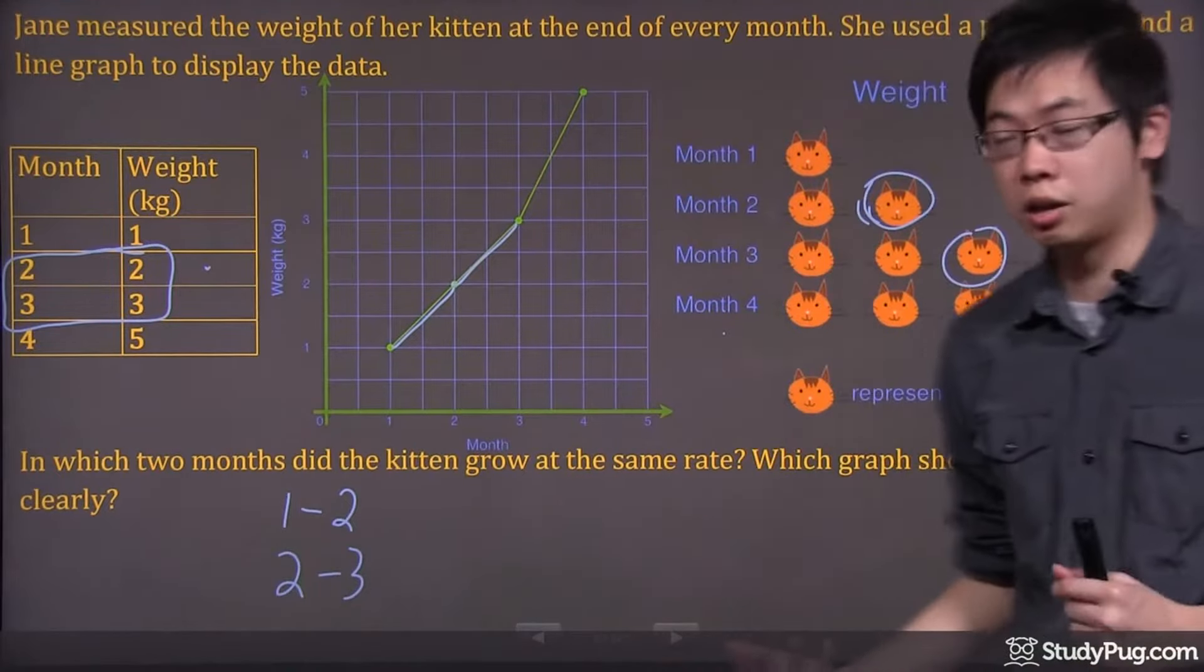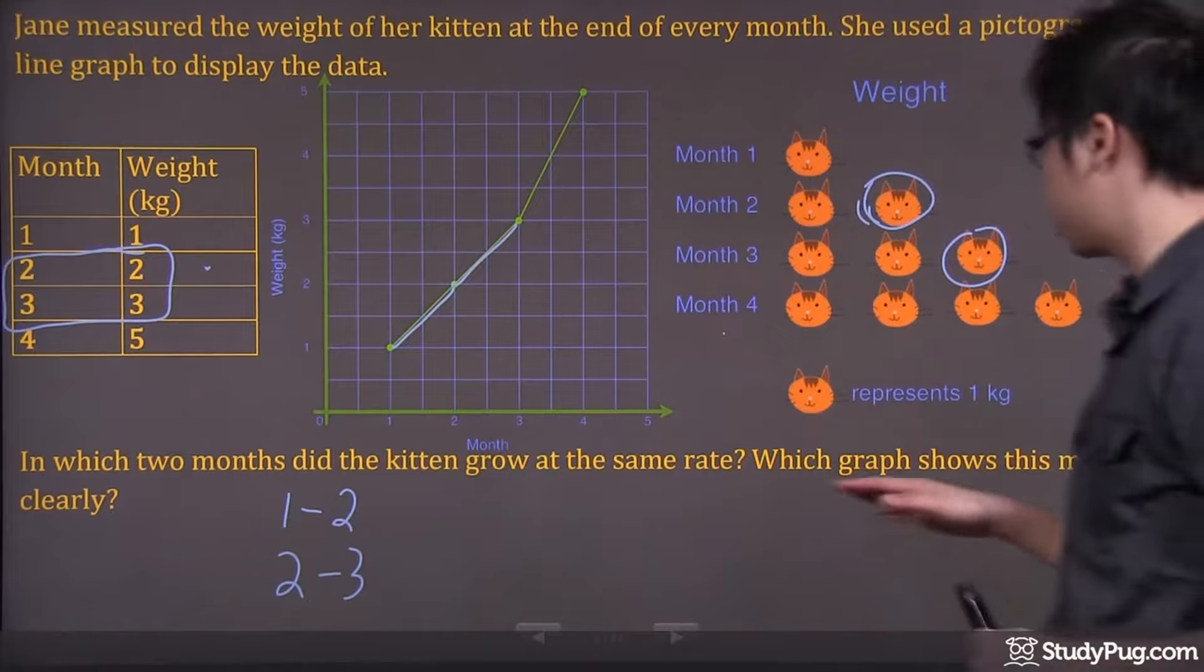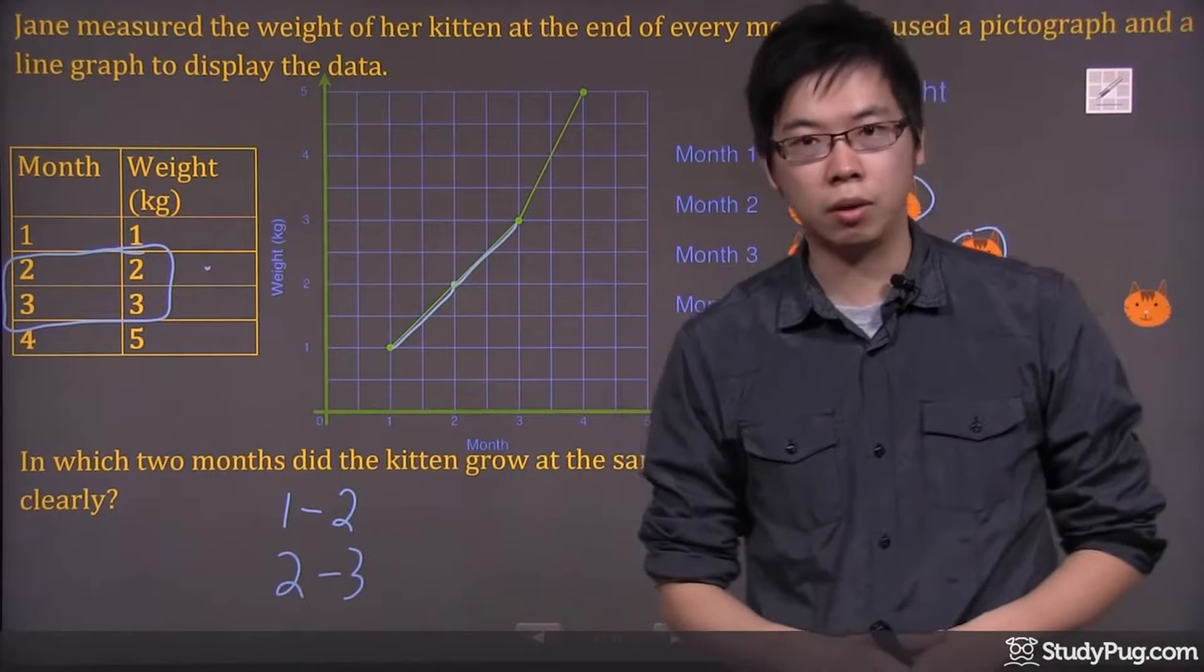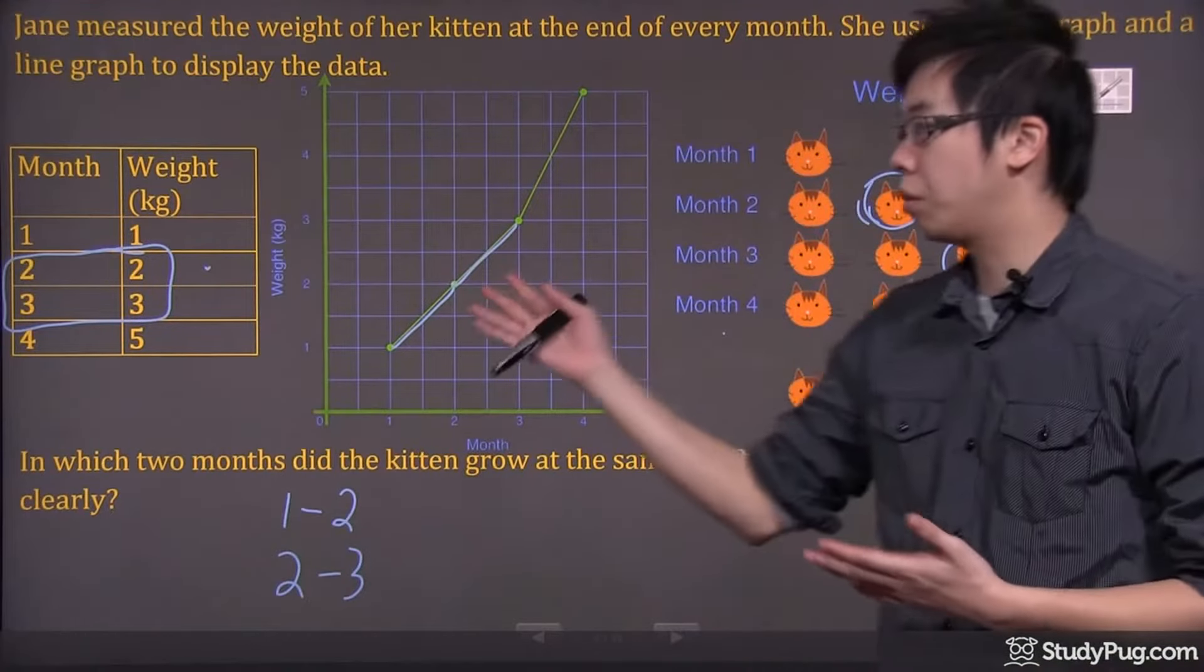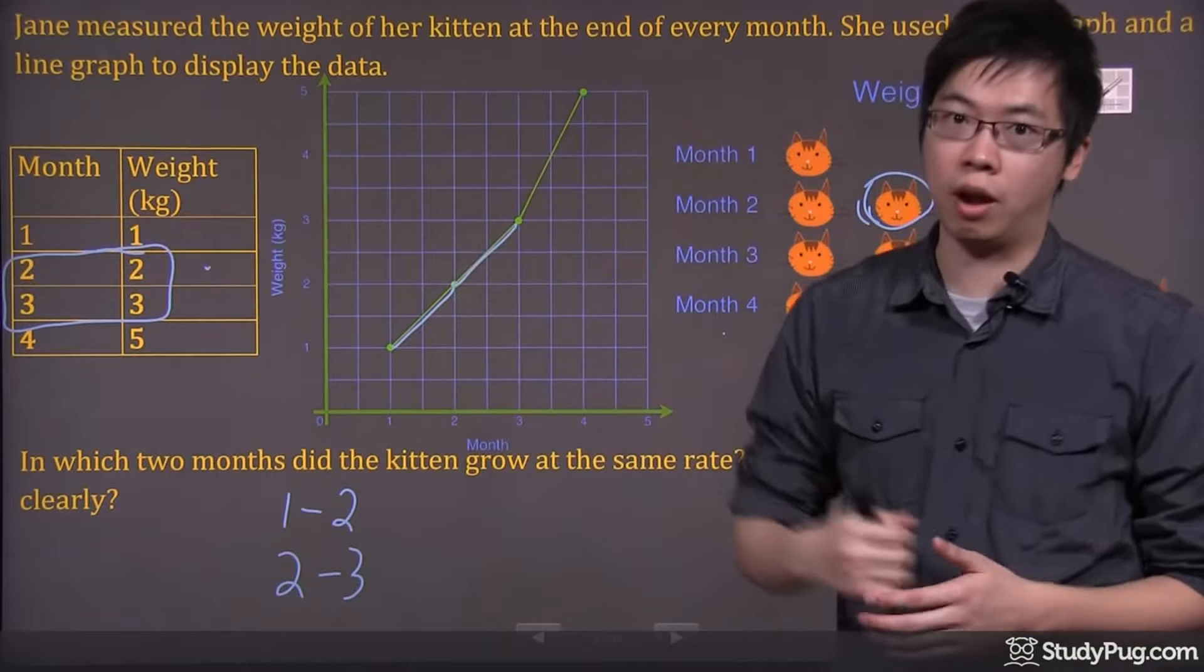The next question asks you, which graph shows this more clearly? For me, I would think it's the line graph.